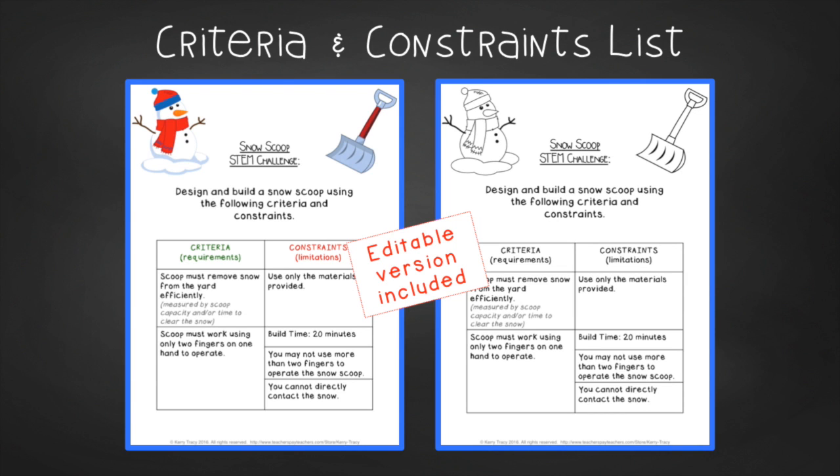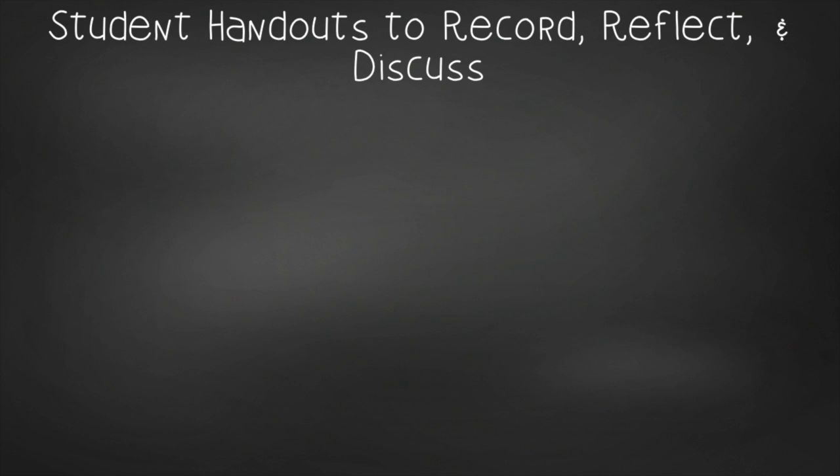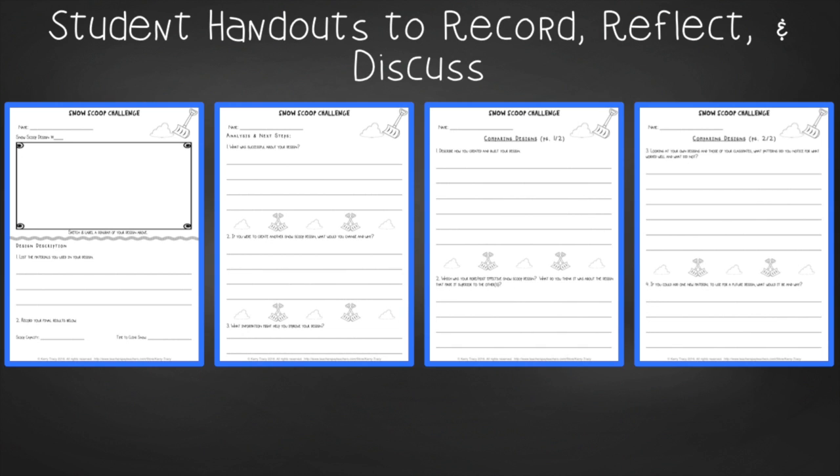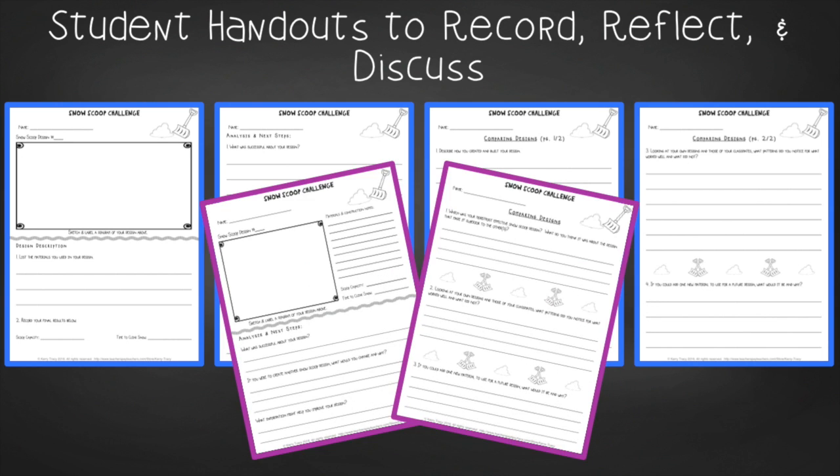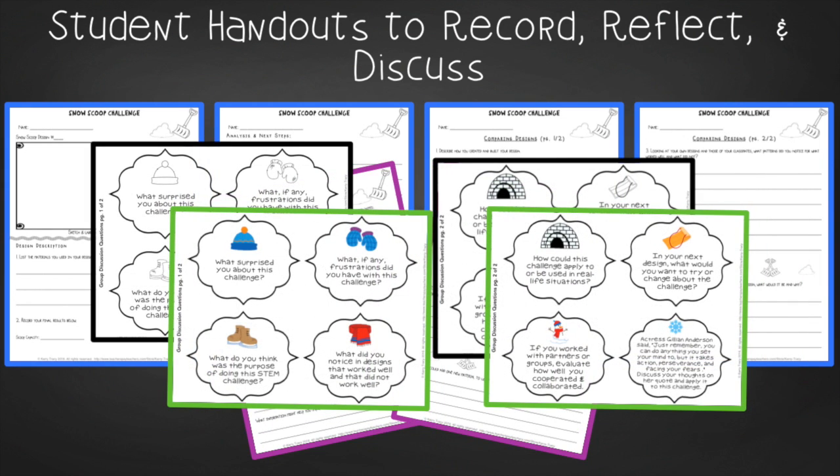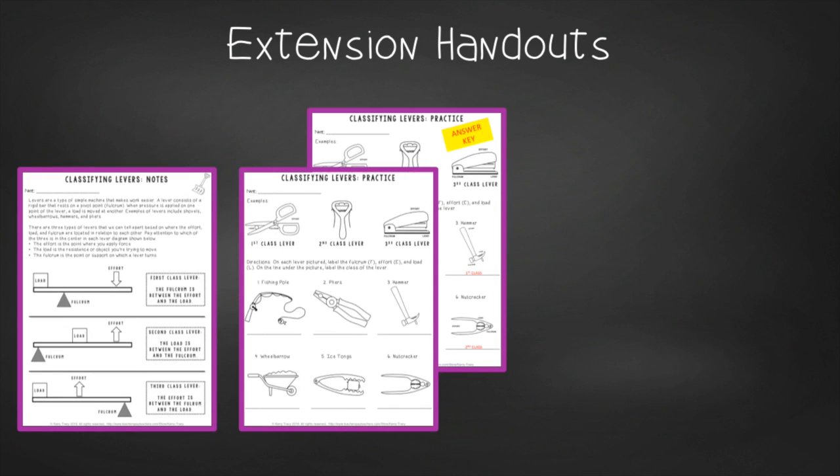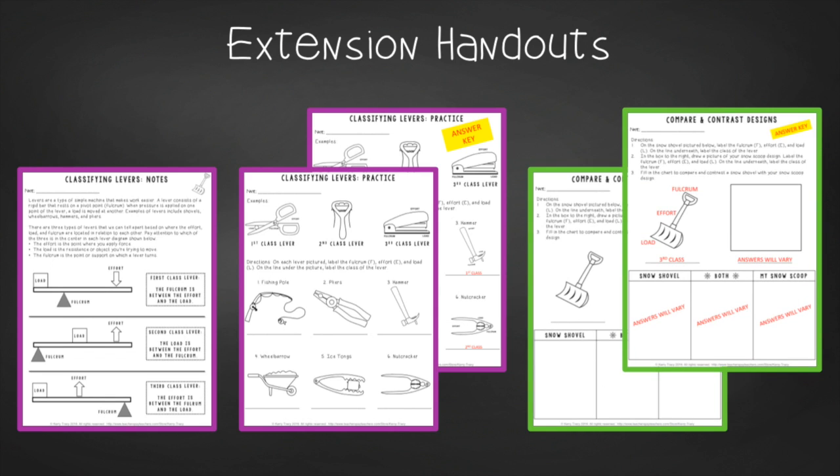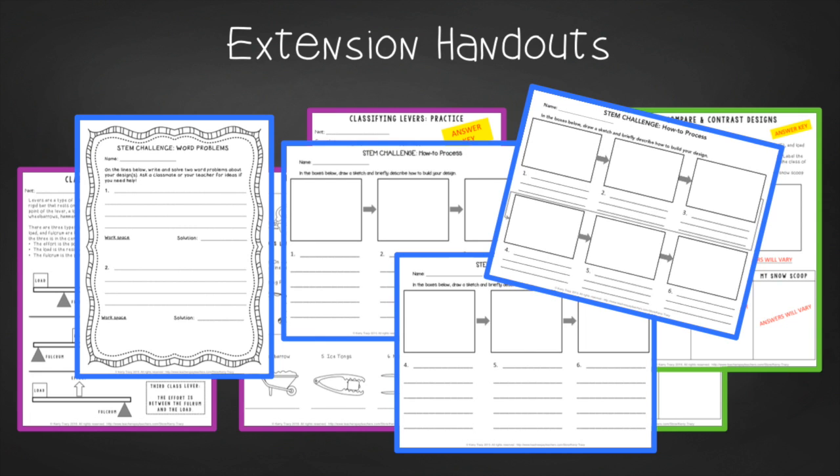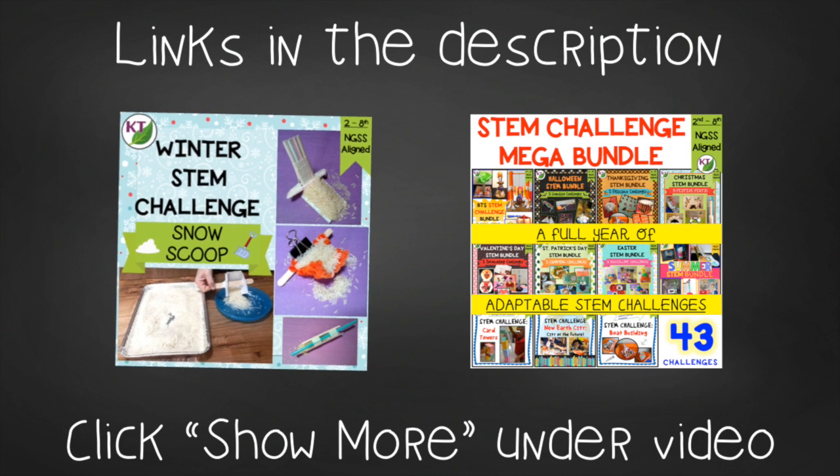You'll find an editable criteria and constraints list so you can tailor the challenge to your students. For student handouts, there are two versions: a four-page expanded room for response for younger students, and a two-page condensed space paper-saver version. You'll also find a set of group discussion questions. In the extension handouts you'll find classifying levers notes and practice with answer key, comparing snow shovel lever classifications, as well as math extension and process flow templates.